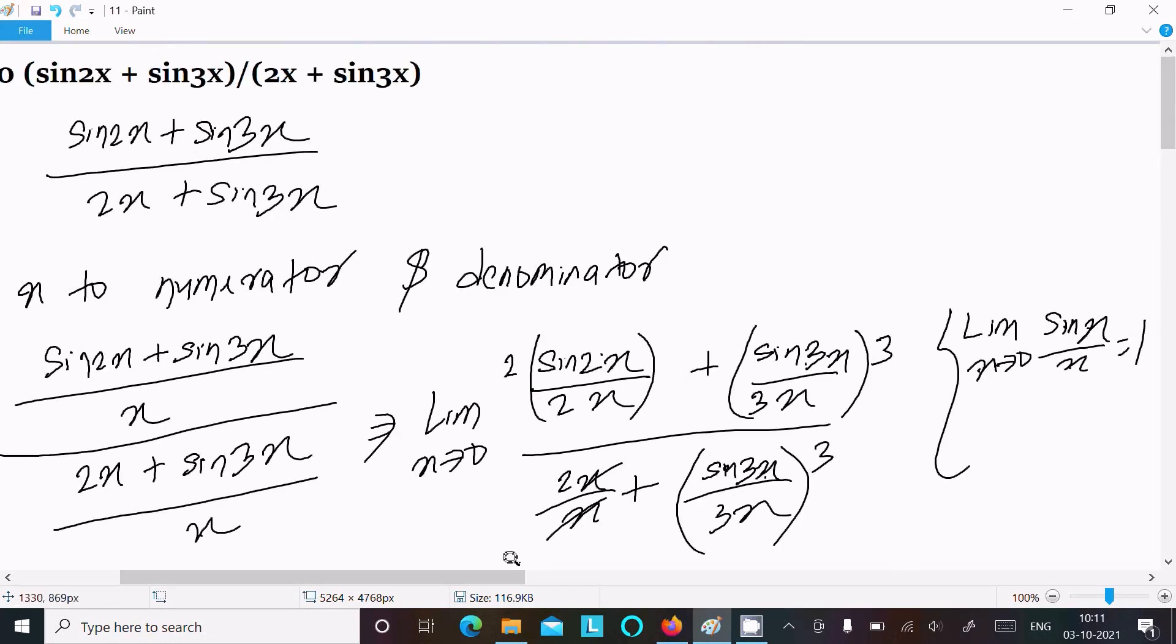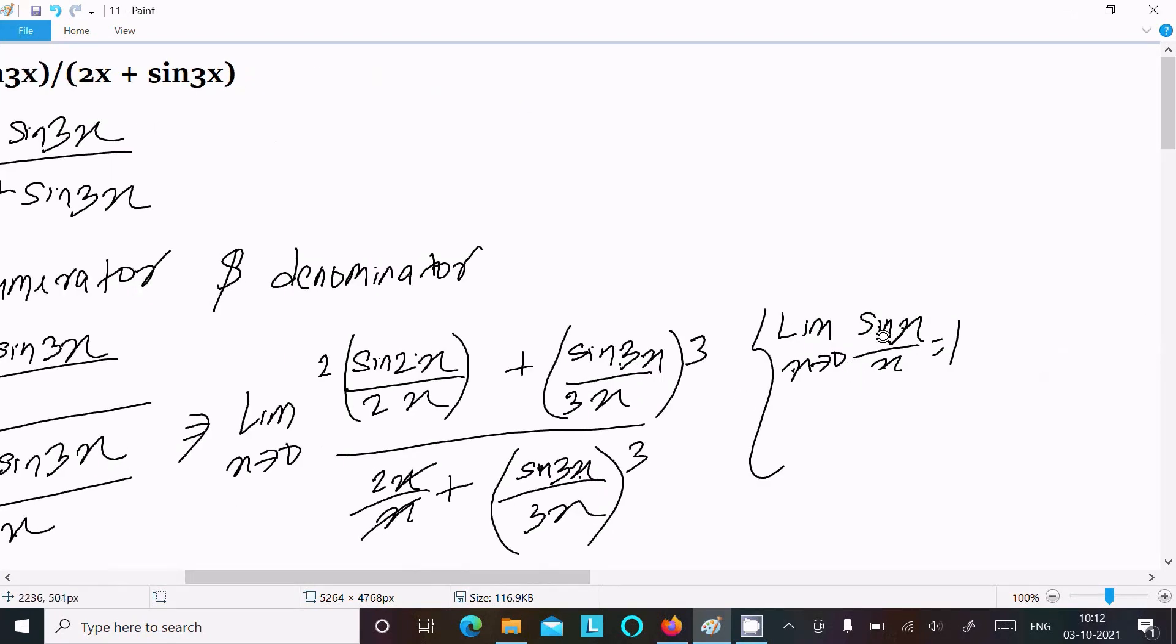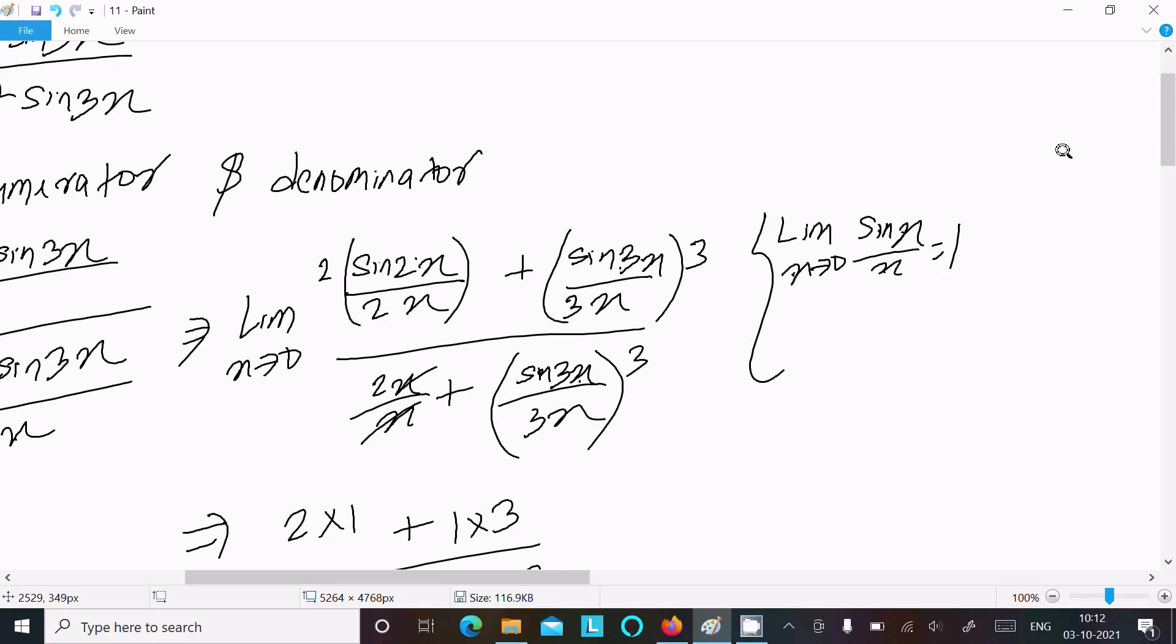So this is the way we can find the value of this limit. So see, here, we easily achieve it when I divide x to numerator and denominator. After that, we know the theorem sin x by x, x tends to 0, that is equal to 1. So here, if 2x tends to 0, sin 2x by 2x, that is equal to 1. So here, x tends to 0, 2x also tends to 0. So this is equal.